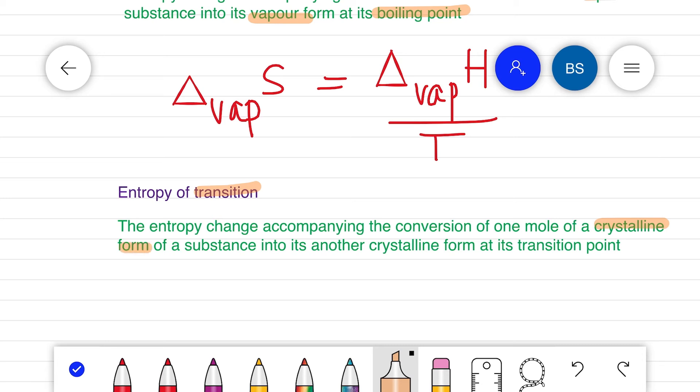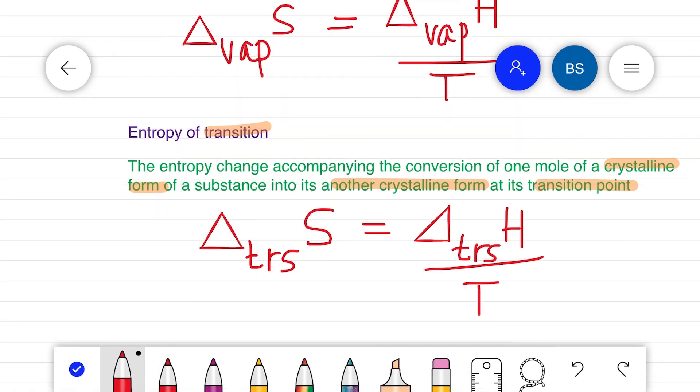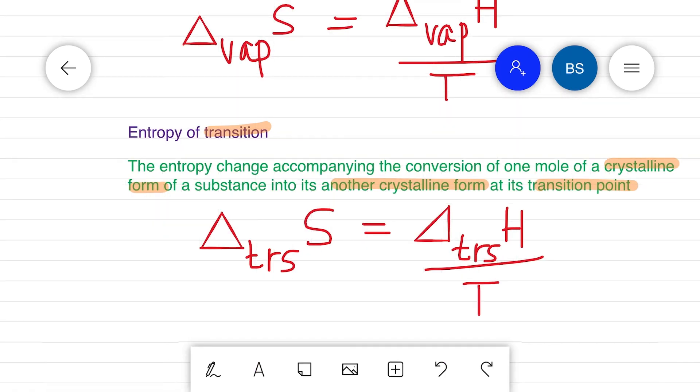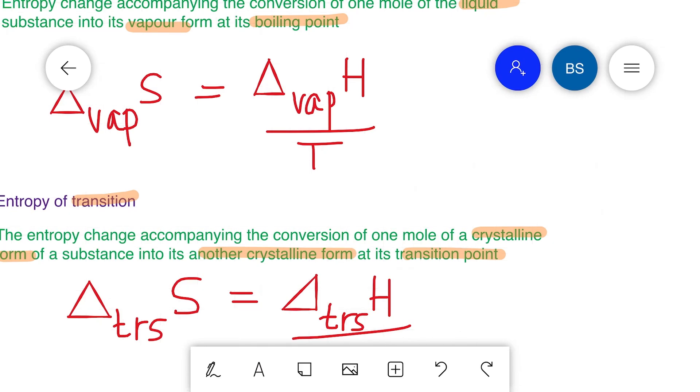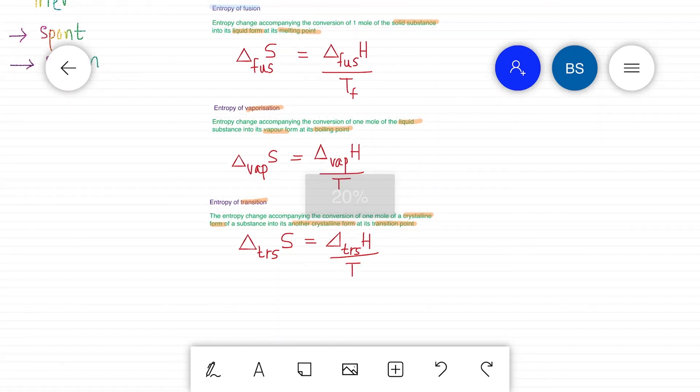During the conversion of one mole of a crystalline form of a substance into its another crystalline form there occurs one transition and some entropy change. This is given by delta transition entropy equals delta transition enthalpy divided by temperature, where T represents the transition temperature.